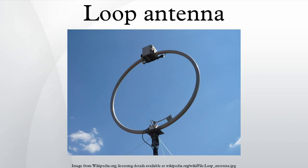A loop antenna is a radio antenna consisting of a loop of wire, tubing, or other electrical conductor with its ends connected to a balanced transmission line. Within this physical description there are two very distinct antenna designs: the small loop with a size much smaller than a wavelength, and the resonant loop antenna with a circumference approximately equal to the wavelength.